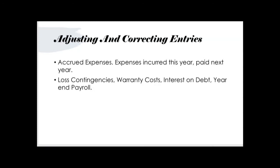As far as adjusting entries go, the area of accrued expenses is probably the most likely to appear. Accrued expenses are expenses the client incurred this year that they won't pay until next year. Examples include loss contingencies, warranty costs, interest on debt, and year-end payroll.